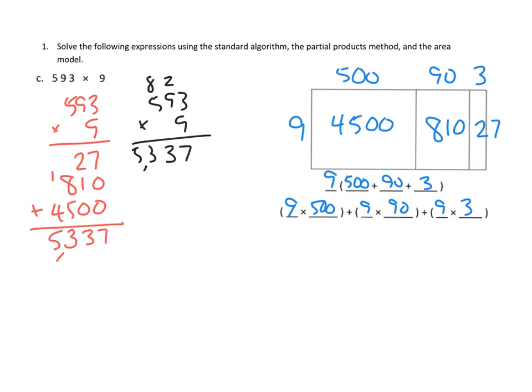We'll have 5,337 here. And though we set up the problem as an area model here, if we added up 4,500 plus 810 plus 27, those are exactly the same as the partial products that we had here. If we added those three things together in our area model, we would get 5,337. So that's three different ways of doing this problem.